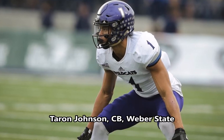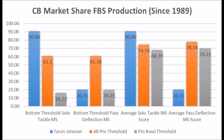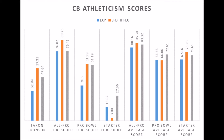Teron Johnson, cornerback out of Weber State: his production data — at lower-level competition — shows 90.90 in solo tackle data and 20.31 in pass-deflection data. The solo tackle data is very good, but pass-deflection data is the major question mark. Athleticism-wise, he has 32.84 in explosiveness, 57.35 in speed, and 47.64 in flexibility. He doesn't quite have All-Pro or Pro Bowl potential based on athleticism testing. Looking at the position averages, he leaves a lot to be desired — the ultimate upside is a starter, but most likely he projects as more of a backup or rotational player.